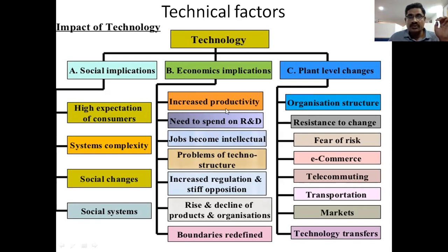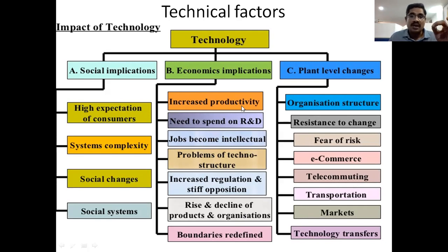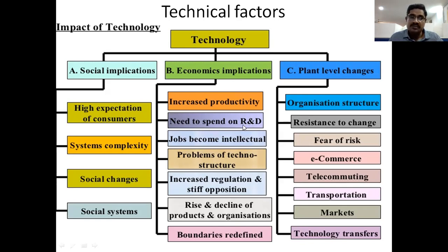So, these are the different activities. First one is increase the productivity. Productivity means produce more with minimum cost. Produce more with minimum cost is here productivity. And next, you need to spend on the R&D activities. R&D activities means research and developmental activities.